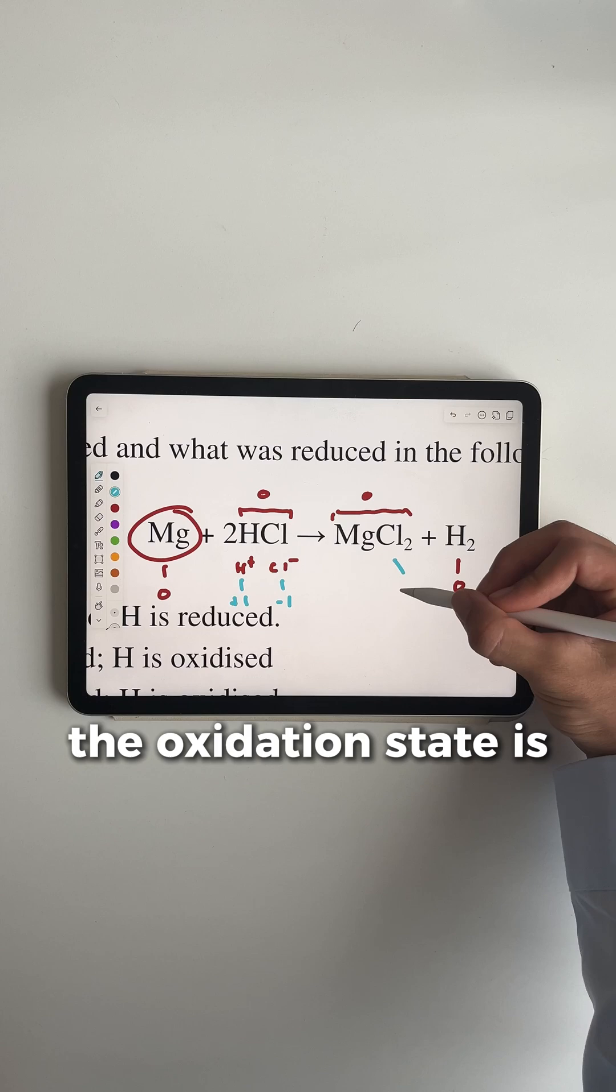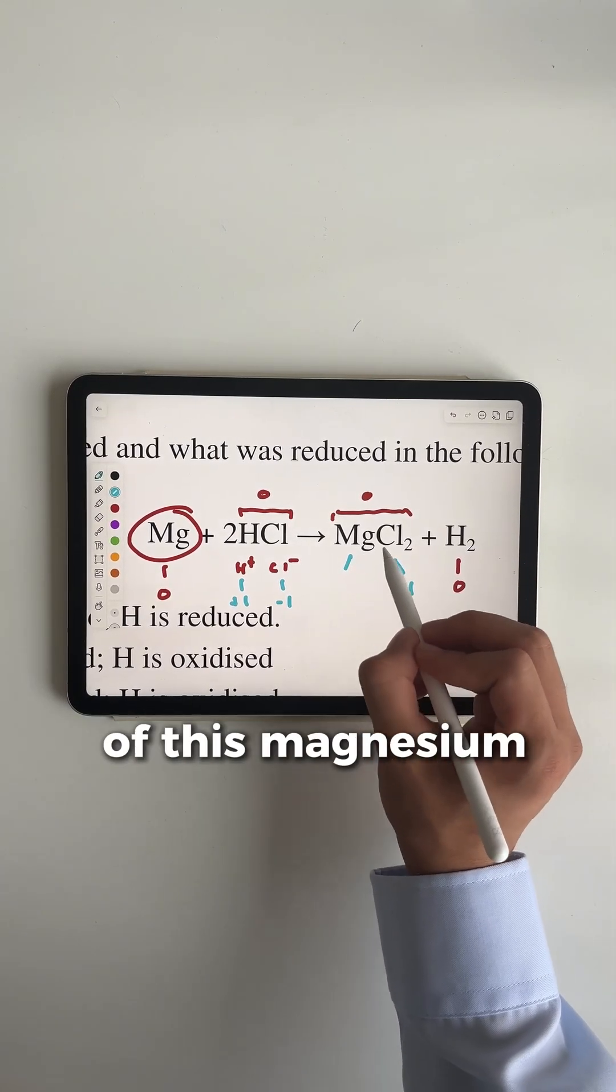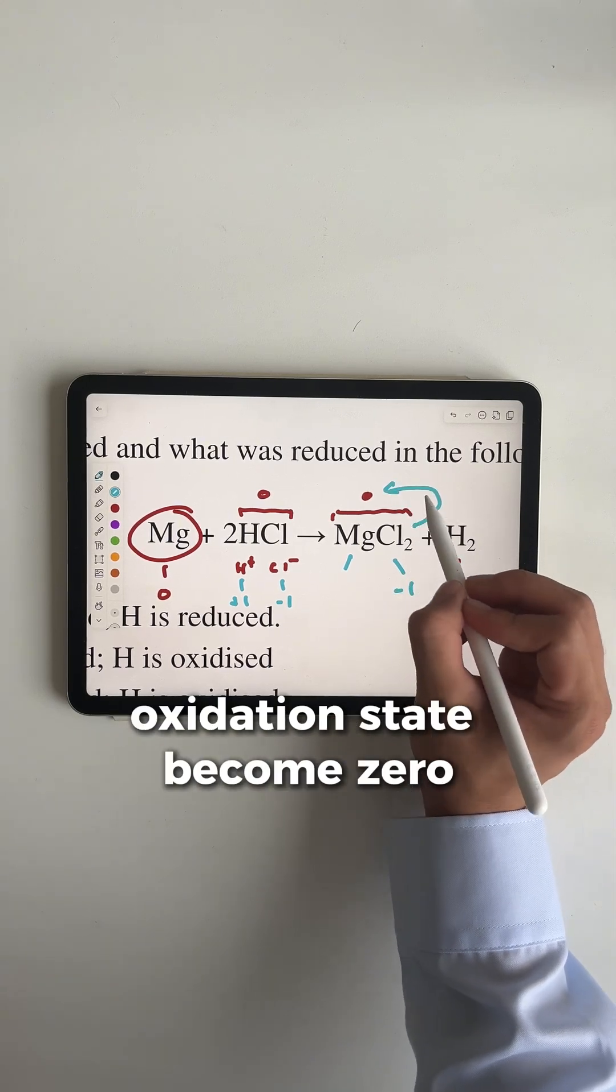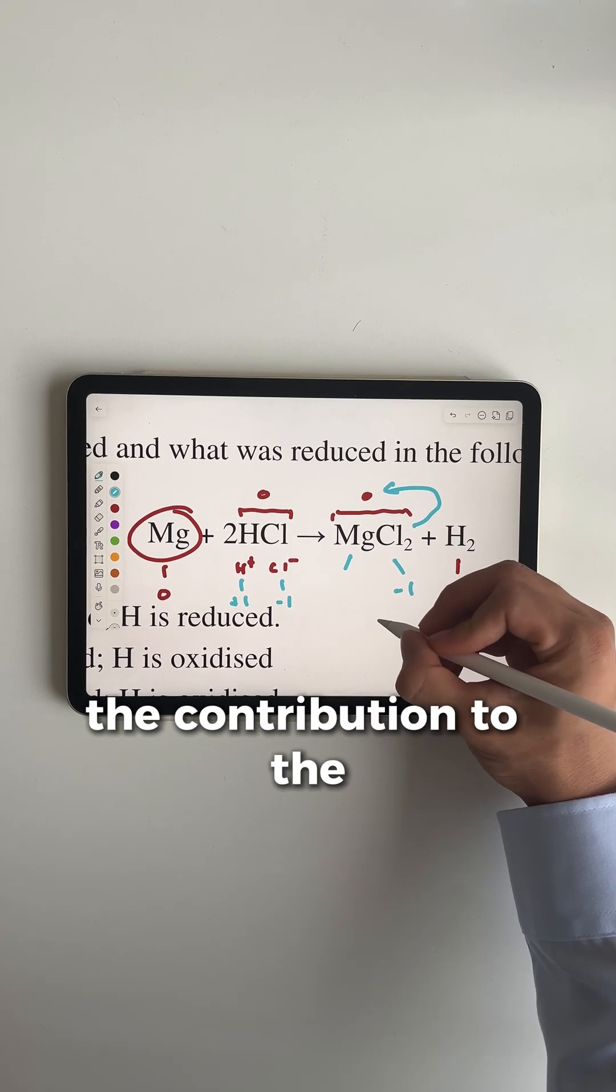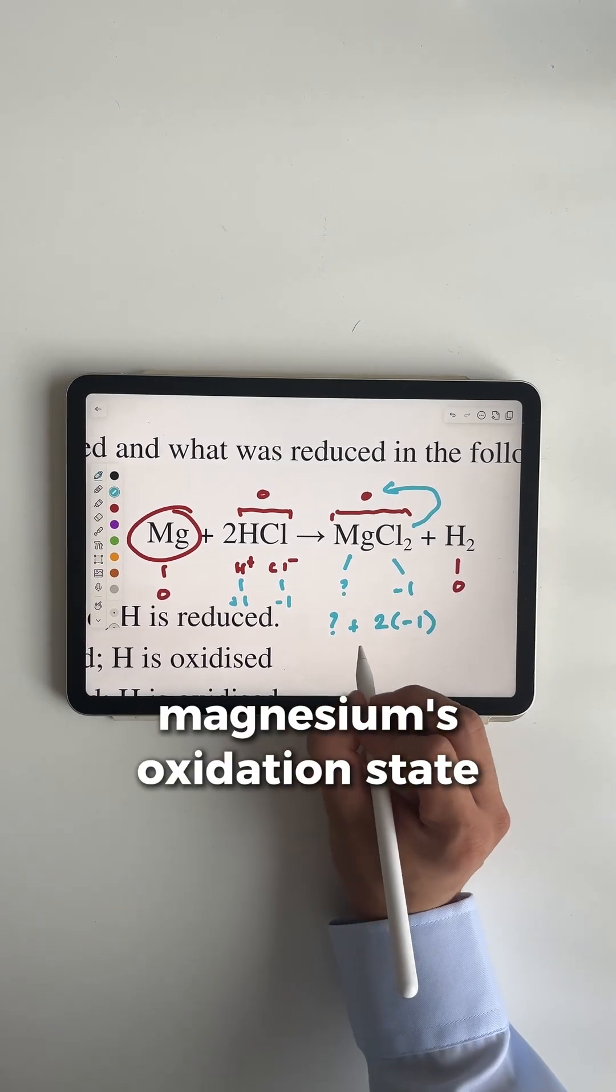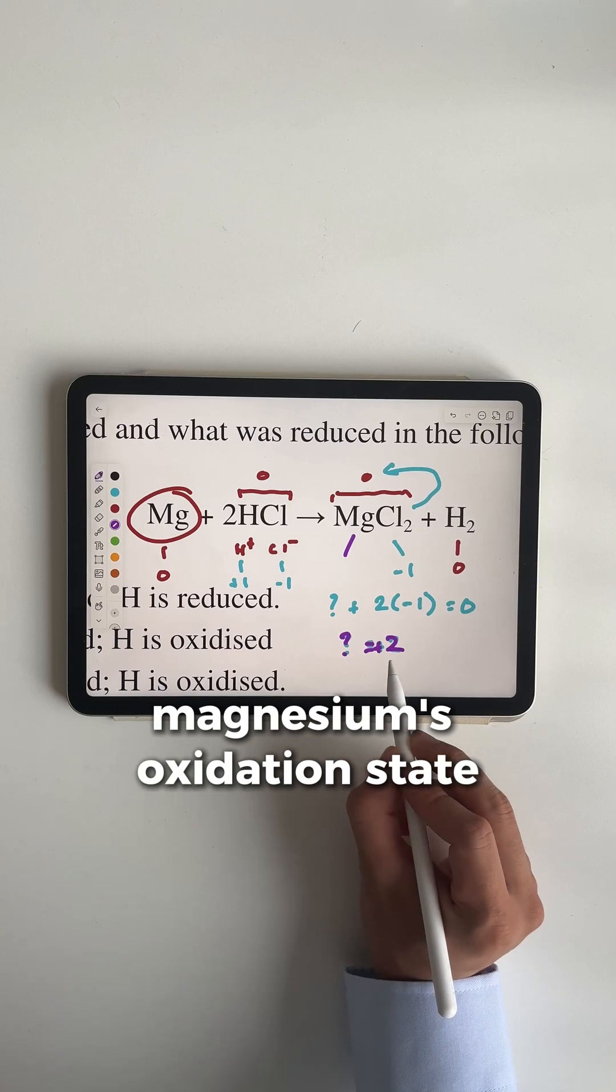Similarly, for chlorine here, the oxidation state is -1 in its ionic form. So to find the oxidation state for this magnesium, we have to find what would make magnesium chloride's overall oxidation state become zero. Since we have two chlorides, the contribution to the oxidation state would be two lots of -1, and when added to magnesium's oxidation state, this should equal zero. So we can solve that magnesium's oxidation state is +2.